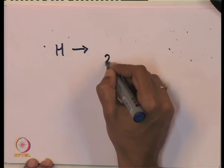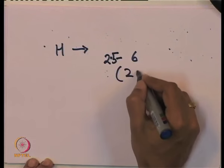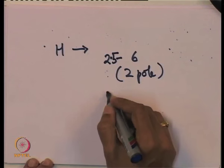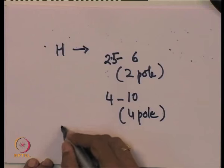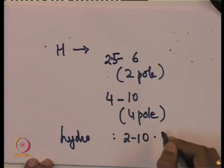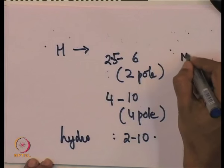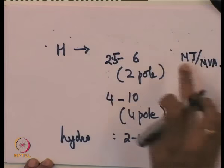Typical values of H: for a thermal unit, H is between 2.5 to 6 mega-joules per MVA (values from Kundur's book, for two-pole and four-pole machines). For hydro units, H is usually 2 to 10 mega-joules per MVA.